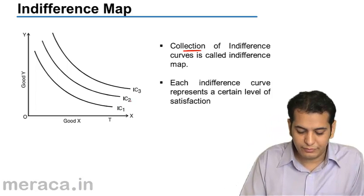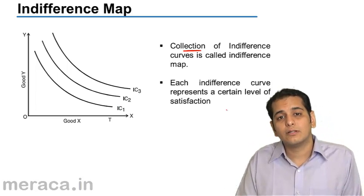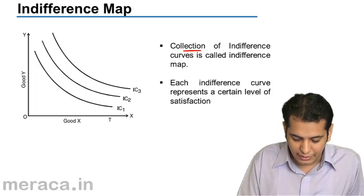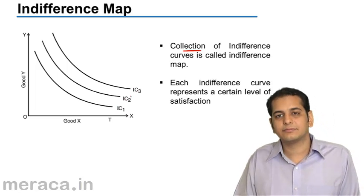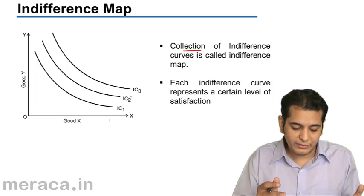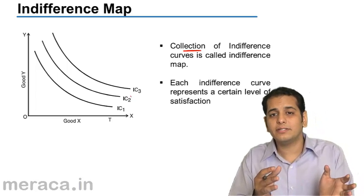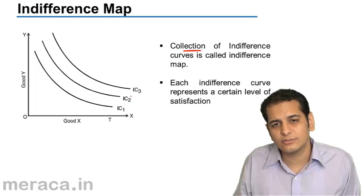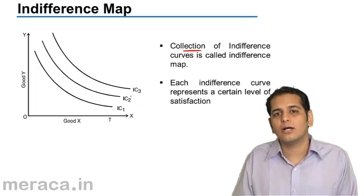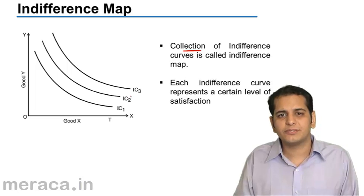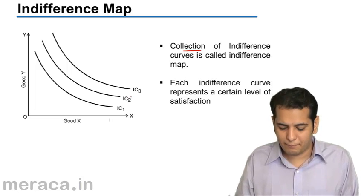In this case we have shown three indifference curves — IC1, IC2, IC3. So when all three indifference curves are shown on a single graph, we call that representation an indifference map.